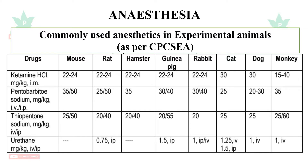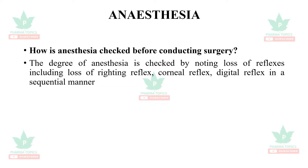Let us see the common anesthetics used in experimental animals: ketamine, pentobarbitone, thiopentone, and urethane. The dose levels have been given for mouse, rat, hamster, guinea pig, rabbit, cat, dog, and monkey. They may be given intraperitoneally or intravenously.